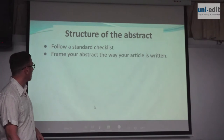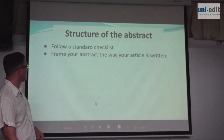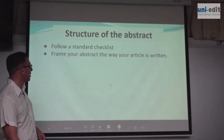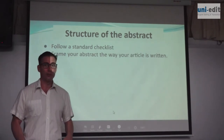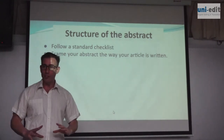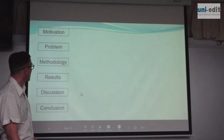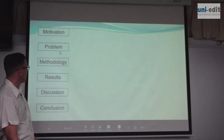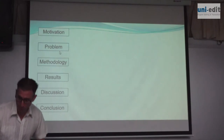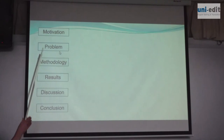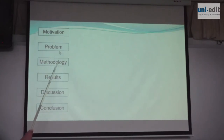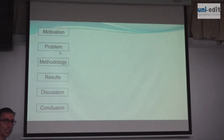Structure of the abstract: follow a standard checklist. Frame your abstract the way your article is written — so if the article follows sections, your abstract also follows sections. Here are the sections: motivation, problem, methodology, results, discussion, conclusion. Your abstract will also have these sections, but a section in an abstract is just one sentence, maybe two sentences.